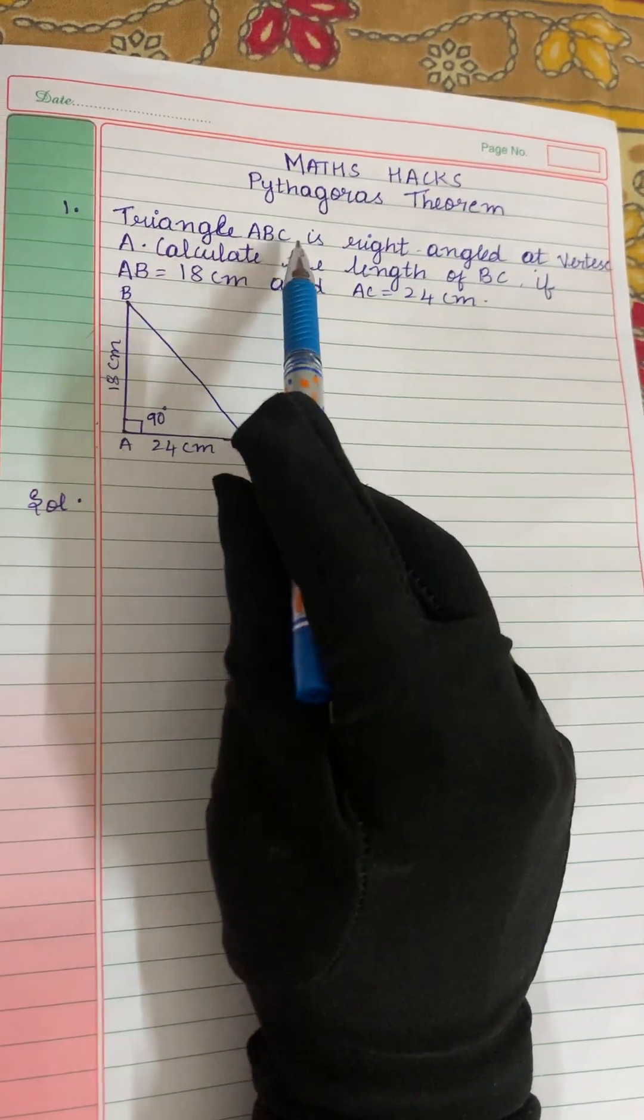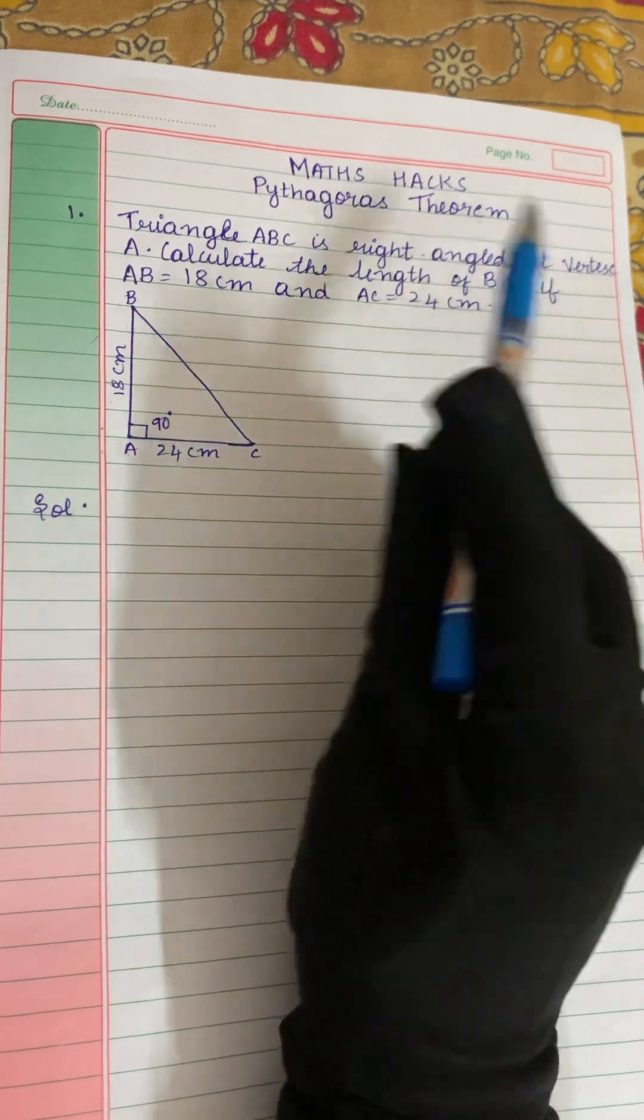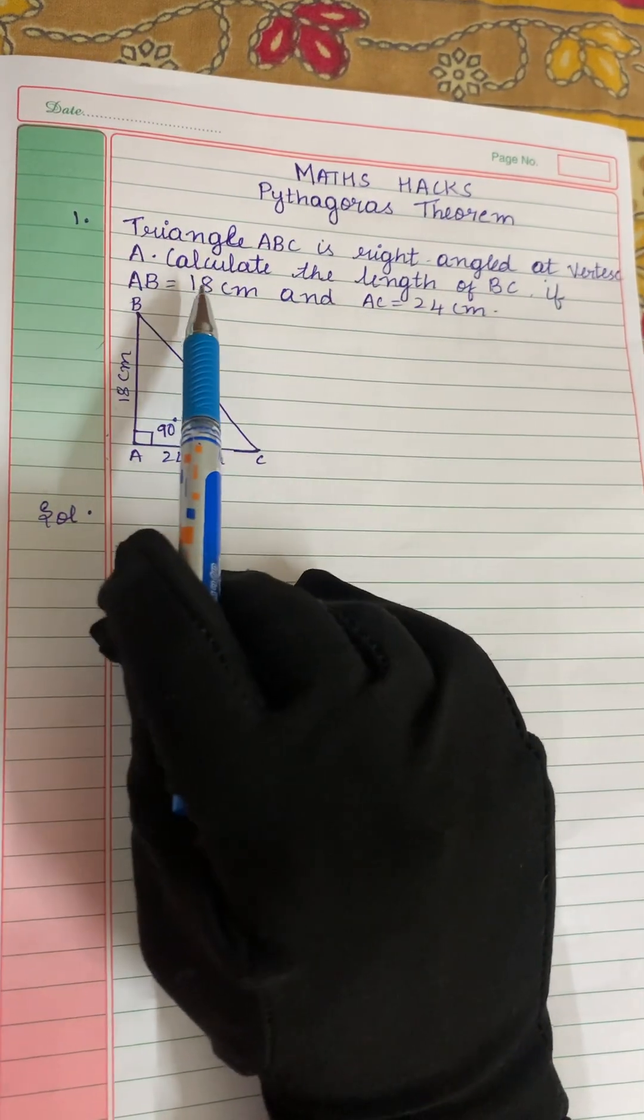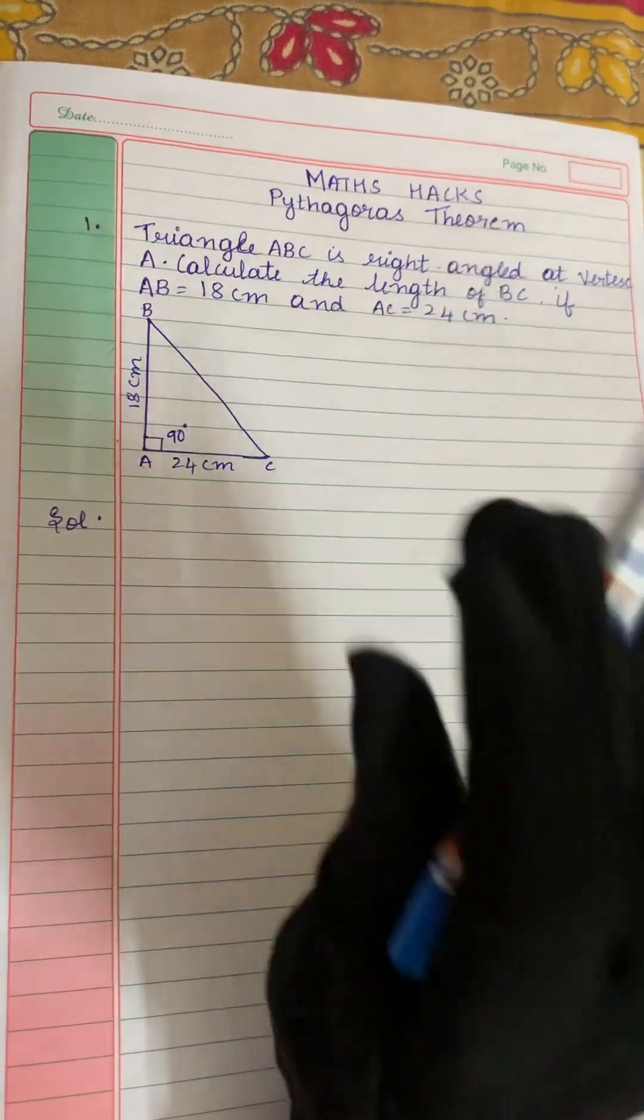Triangle ABC is right angled at vertex A. Calculate the length of BC if AB is equal to 18 cm and AC is equal to 24 cm.